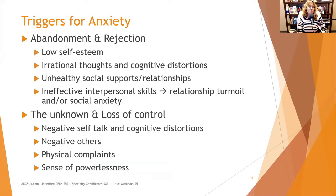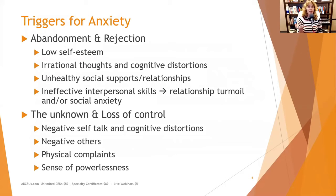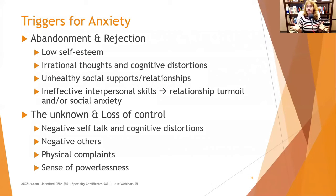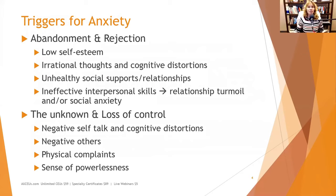Triggers for anxiety include abandonment and rejection. Underlying themes I've seen in clients and in research include low self-esteem. If someone has low self-esteem, they often look for external validation — someone to tell them they're lovable and okay. That can lead to anxiety about not having people affirm them, making relationships tenuous and dysfunctional. Irrational thoughts and cognitive distortions may lead people to believe that if they're not perfect, they are not lovable.